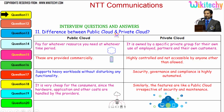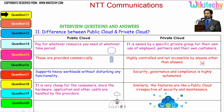Here is the question: what is the difference between the public cloud and the private cloud? The public cloud is like viewing a film in a cinema theatre, while the private cloud is like viewing a film at home using a DVD — you pay for whatever resource you need at whatever time period. The private cloud is owned by a specific private group for their own use, employed partners, and their own customers. These are provided commercially and are highly controlled, not accessible to anyone other than those allowed. It supports heavy workloads without disturbing functionality, and security, governance and compliance are highly automated. The public cloud is very cheap for consumers since the hardware, application and other costs are handled by the providers.